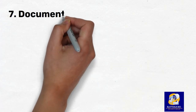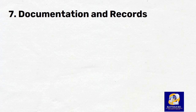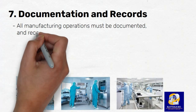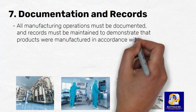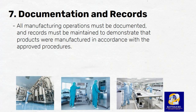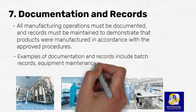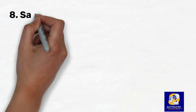Number 7: Documentation and Records. The seventh principle of GMP is the maintenance of accurate and complete documentation and records. All manufacturing operations must be documented and records must be maintained to demonstrate that products are manufactured in accordance with the approved procedures. Examples of documentation and records include batch records, equipment maintenance records, and personnel training records.